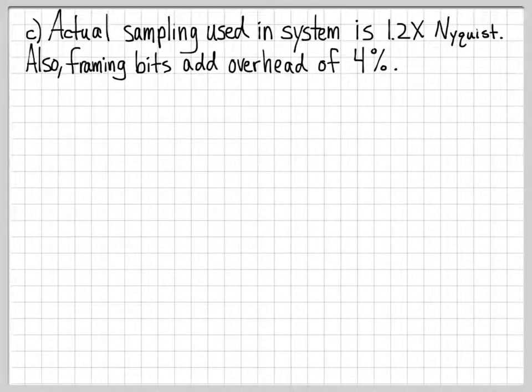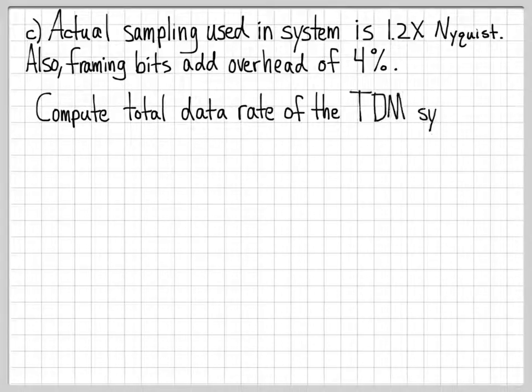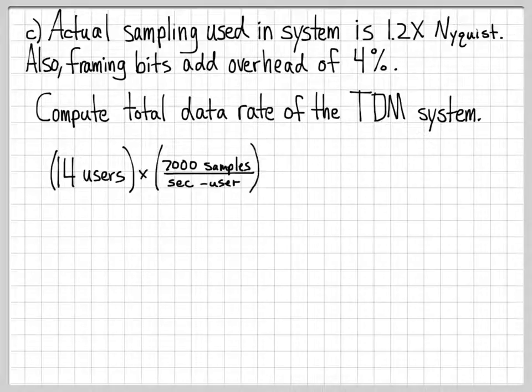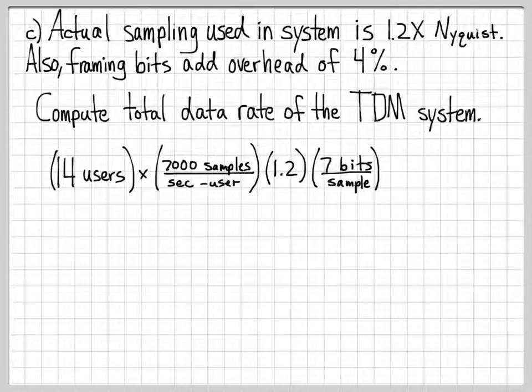Each one of those samples we're going to write down as a 7-bit word. Let's do some final calculations here. Instead of sampling at exactly the Nyquist rate, we're going to go ahead and sample just a little bit over. We're going to sample at 1.2 times the Nyquist rate. And we're also going to quantify specifically how much framing bits are going to add to our system. Remember, the framing bits are what are used at the receiver to dig out individual data streams. So with these numbers, we can now compute what the total data rate of the TDM system is. So by the TDM system, we mean all 14 user signals aggregated into one data stream. What is the data rate of that signal? So we can do that computation fairly easily. It's kind of just a unit analysis problem at this point. We have 14 users, and each user is being sampled at 7,000 samples per second times 1.2, because we're oversampling a little bit. 7,000 was the Nyquist rate, but we're told right here in problem C that we're going to sample at 1.2 times it. So each one of those samples we write down as a 7-bit word. So 14 users times 7,000 samples per second times 1.2 times 7 bits per sample.